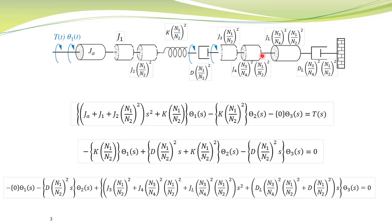The third equation: plus theta three of s multiplied by the sum of impedances connected with theta three. All these impedances — this one, this one, this one, this one, this one, and this one — are all connected with theta three and are written in this equation. These three equations together describe the complete mathematical model for the mechanical system shown on the previous slide.